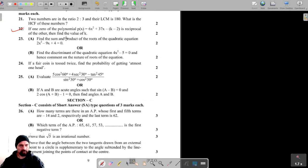Okay, for question number 22, it is given that one zero of the polynomial is reciprocal of the other.